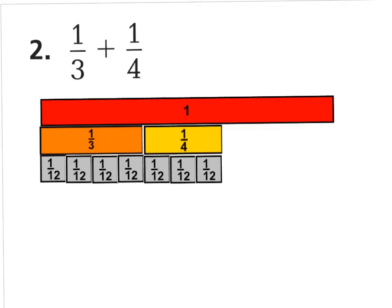Let's start with question number two: 1/3 plus 1/4. Now if you look at this red fraction bar right here, this is the equivalent of one whole — it has that value. Below it, this is our addition question: 1/3 plus 1/4. We know our answer is going to be less than one whole because our model shows that.